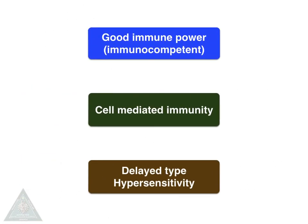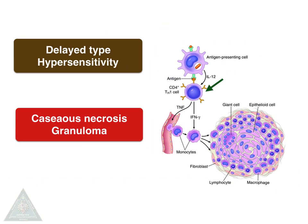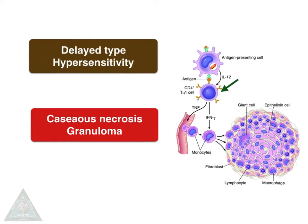With good immune power or an immunocompetent host, cell-mediated immunity will take place to get rid of the organism through delayed type of hypersensitivity. In this delayed type of hypersensitivity, we can get caseous necrosis with granuloma with the help of T helper cells.